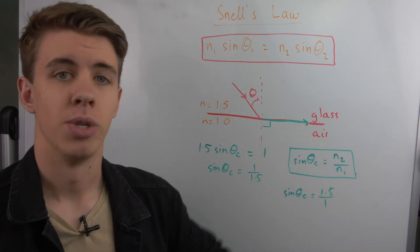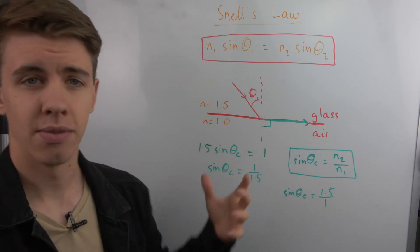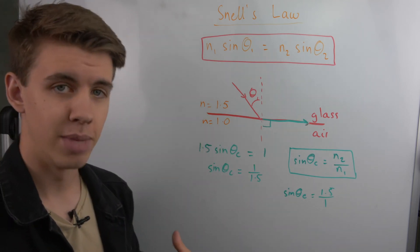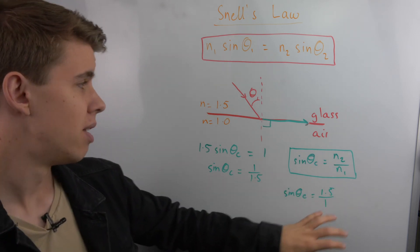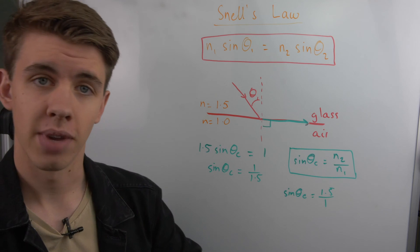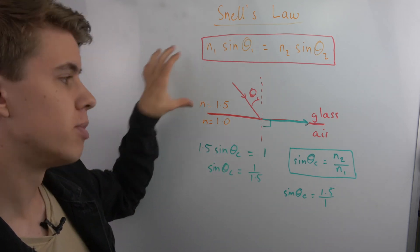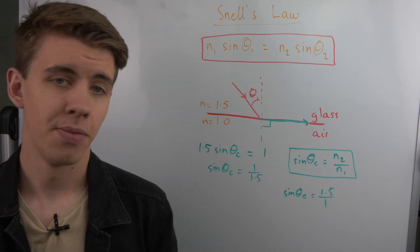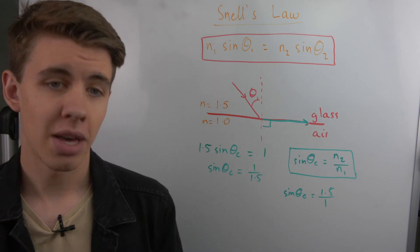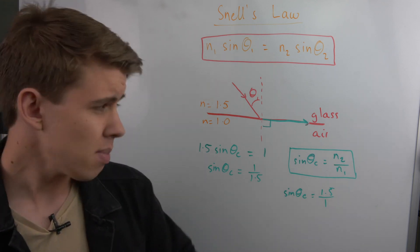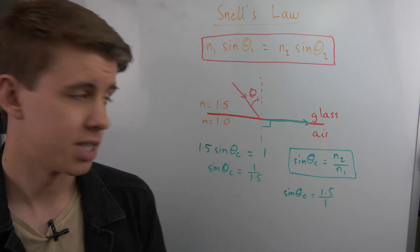So if we have that sine of theta is equal to 1.5, there are no values of theta for which this can actually happen, which means that there are no values of this angle where we can have total internal reflection traveling from a lower dense medium to a high density medium. This just proves that in order for total internal reflection to happen, we need to go from a more dense medium to a less dense medium. And that's Snell's law.